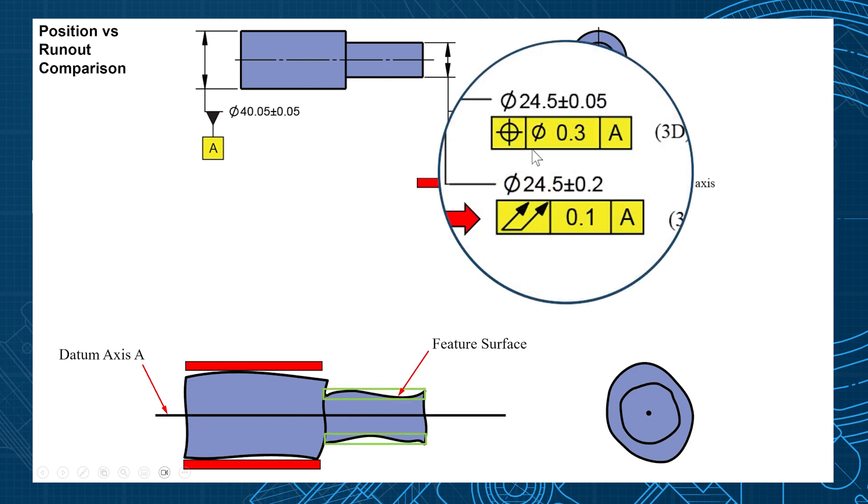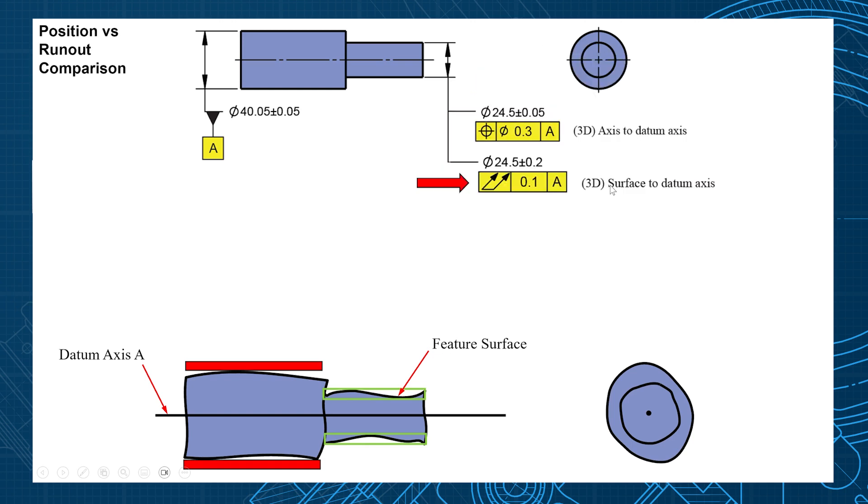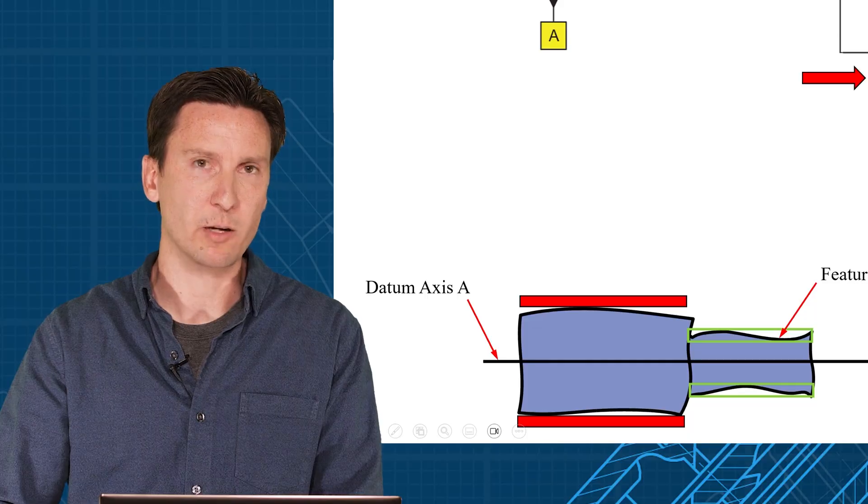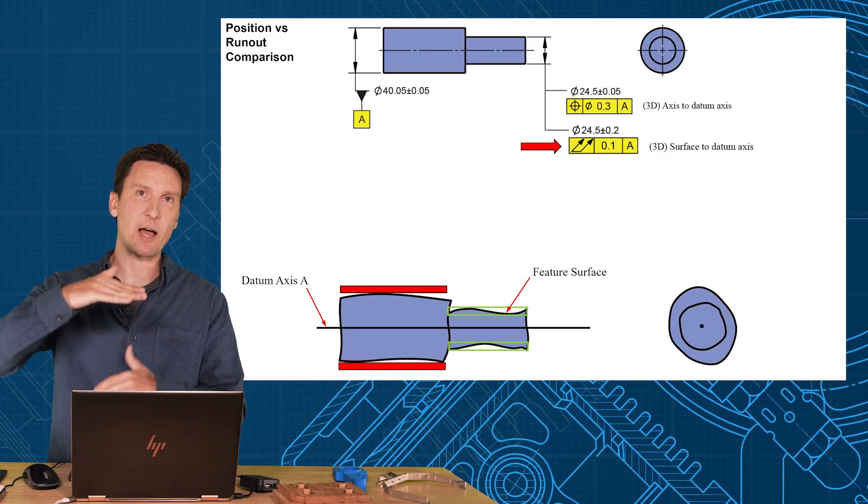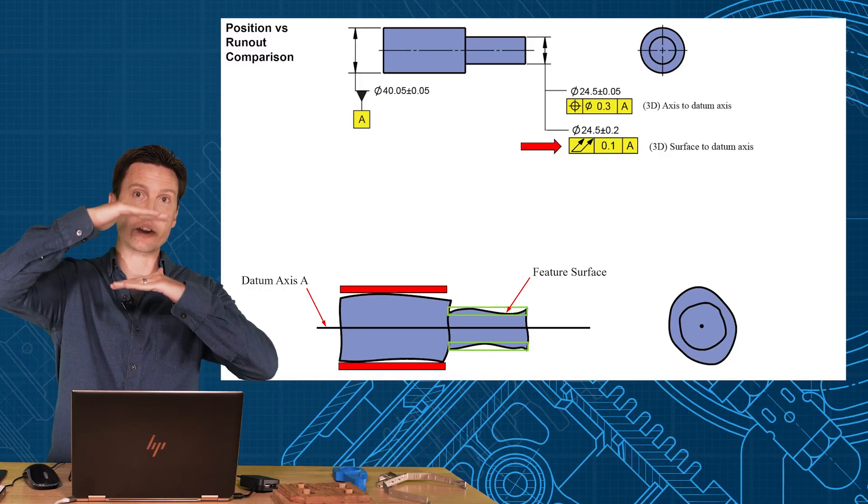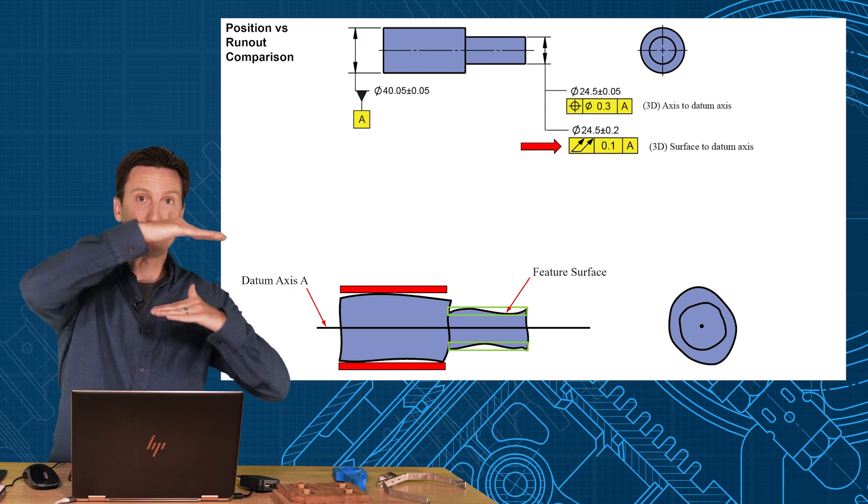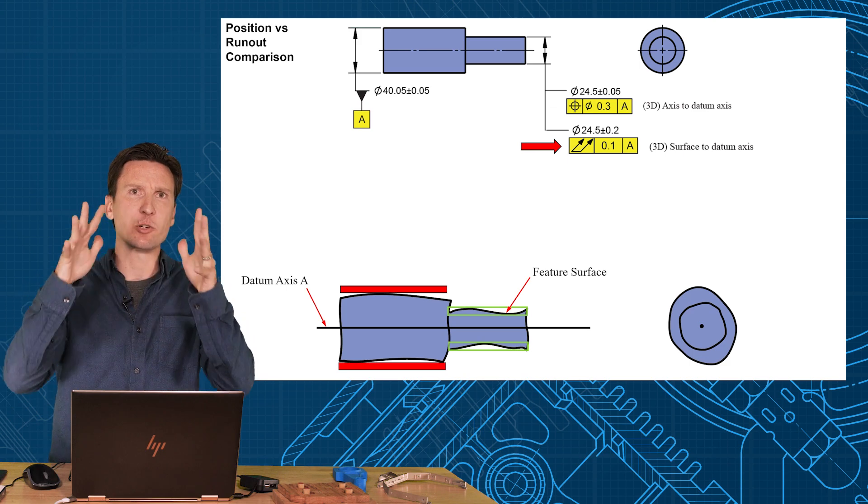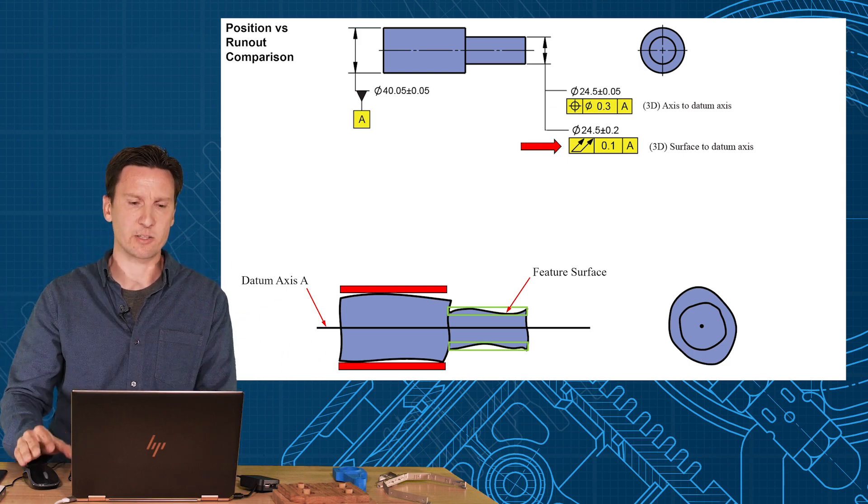So let's start with the first example, runout. Now remember, this is a comparison between them, you wouldn't have both of them. But let's do runout here, give it a size tolerance plus or minus 0.2 and a runout of 0.1. Now runout is a surface control. So the entire feature surface has to lie within two coaxial cylinders. So the separation between these two cylinders is the 0.1. So notice when that surface lies within that tolerance zone, that controls the centering of it and it controls the form of it at the same time. Because if the surface has to lie within the tolerance zone, you're also controlling how out of round and how out of straight it is as well.